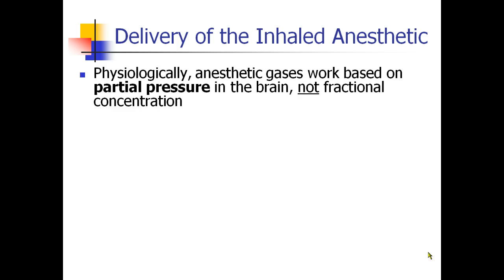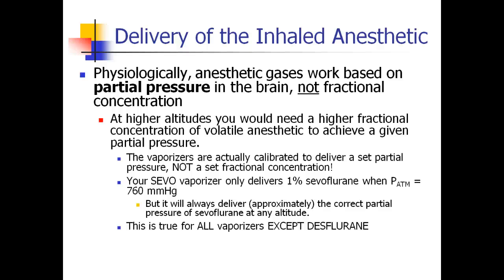Physiologically, these gases work based on partial pressure in the brain, not fractional concentration. Your brain needs 7.6 mmHg of isoflurane, not 1%. At higher altitudes, you need a higher fractional concentration to get that same partial pressure. If you look at your sevoflurane vaporizer, it's calibrated at 1%, 2%, and so on — but actually it's calibrated to deliver a set partial pressure. It only delivers 1% sevoflurane when atmospheric pressure is 760 mmHg. If you take that vaporizer up to Denver or somewhere with very low atmospheric pressure, it will still deliver 7.6 mmHg of sevoflurane, but it won't be 1% even though your dial says 1% — it'll be 2%. This is true for all of our vaporizers except desflurane, which we'll discuss more later.